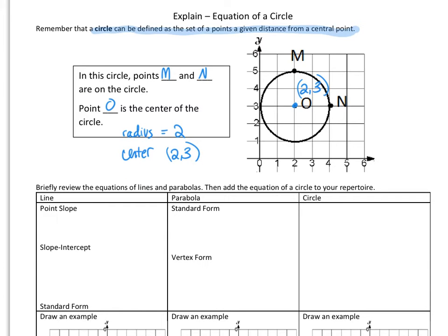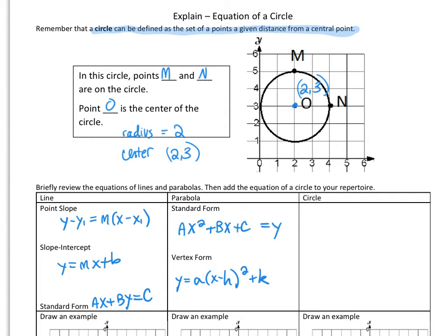You already know how to write the equation of a line. In fact, you know three different ways to do it. You also know a couple of different ways to write the equation of a parabola. Today we're talking about the equation of a circle. And here's the general form for the equation of a circle.